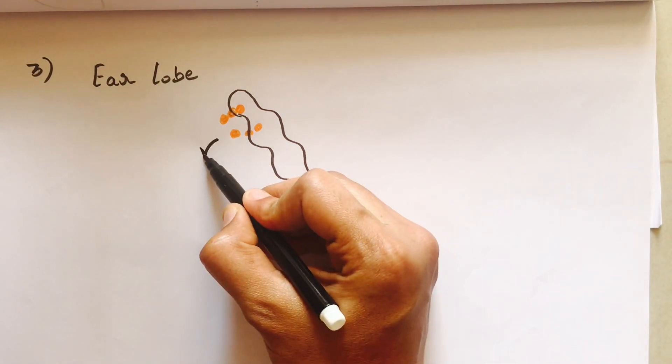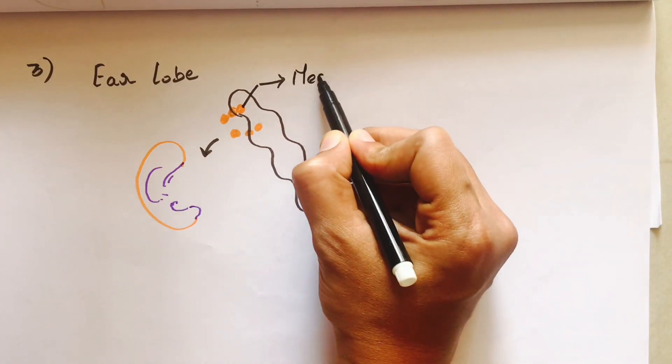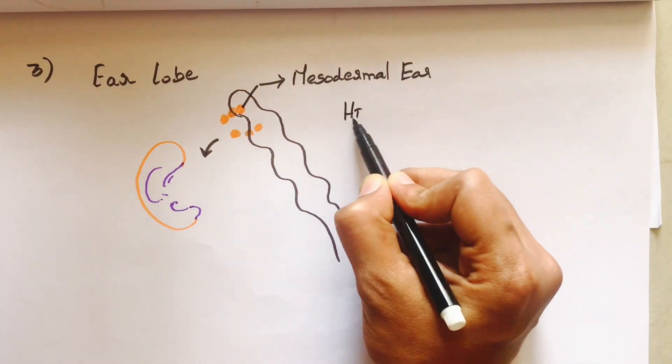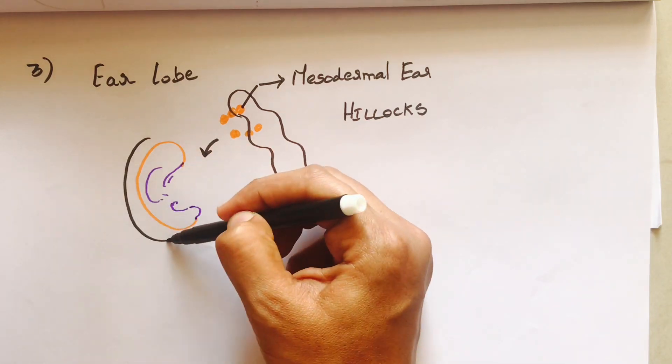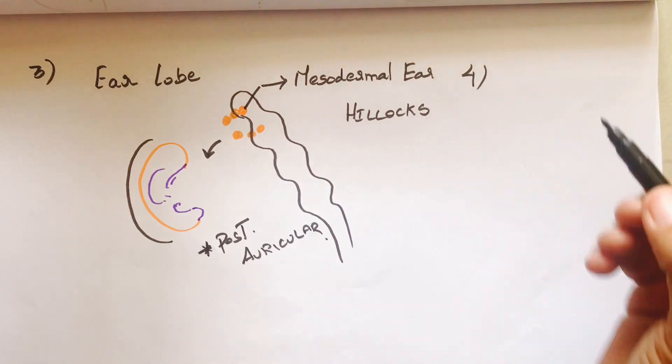The ear develops from ear hillocks. We have three ear hillocks from the first pharyngeal arch and three from the second pharyngeal arch. These mesodermal ear hillocks fuse to form the pinna, and at the line of embryonic fusion, the dermoid cyst occurs.